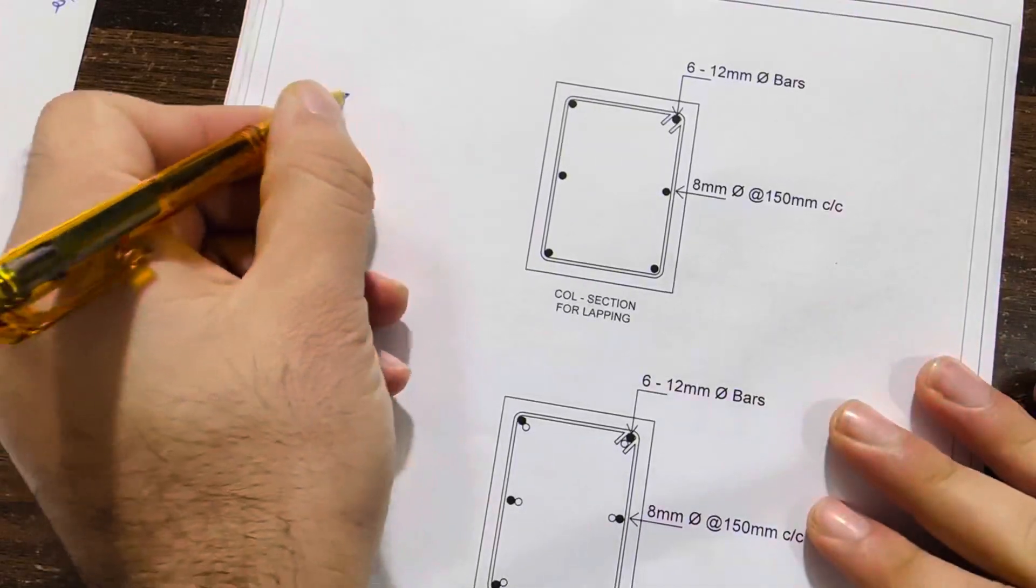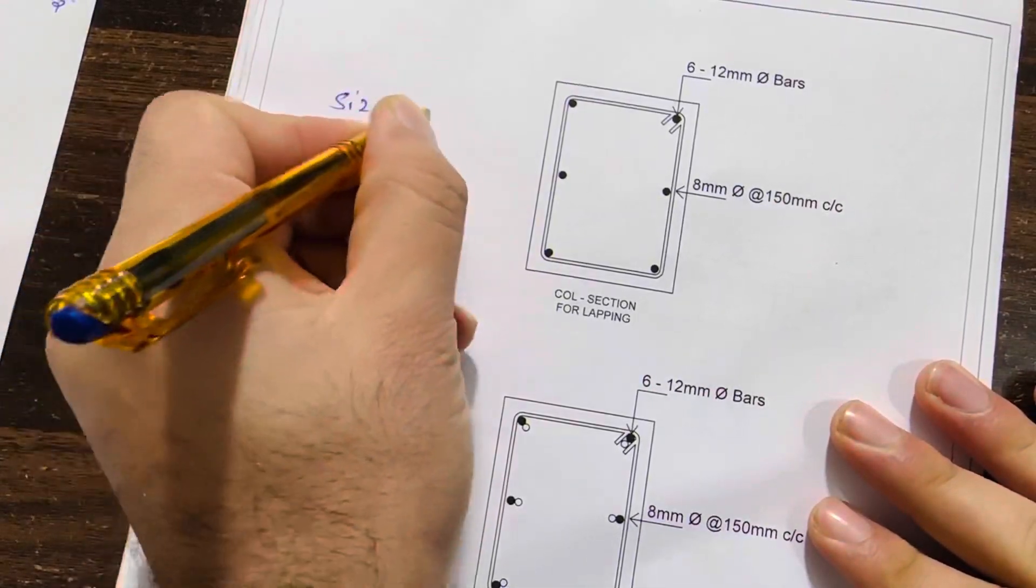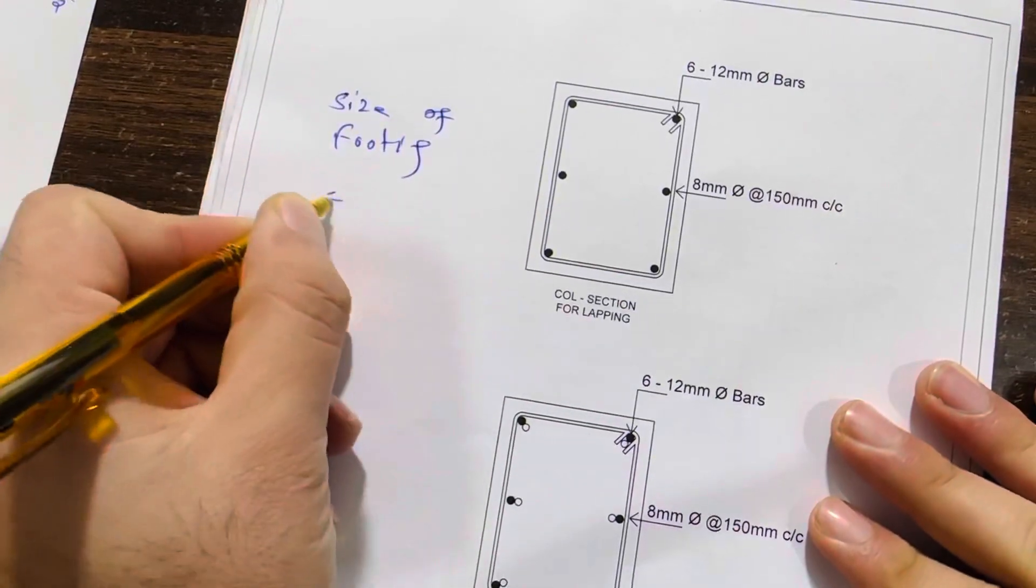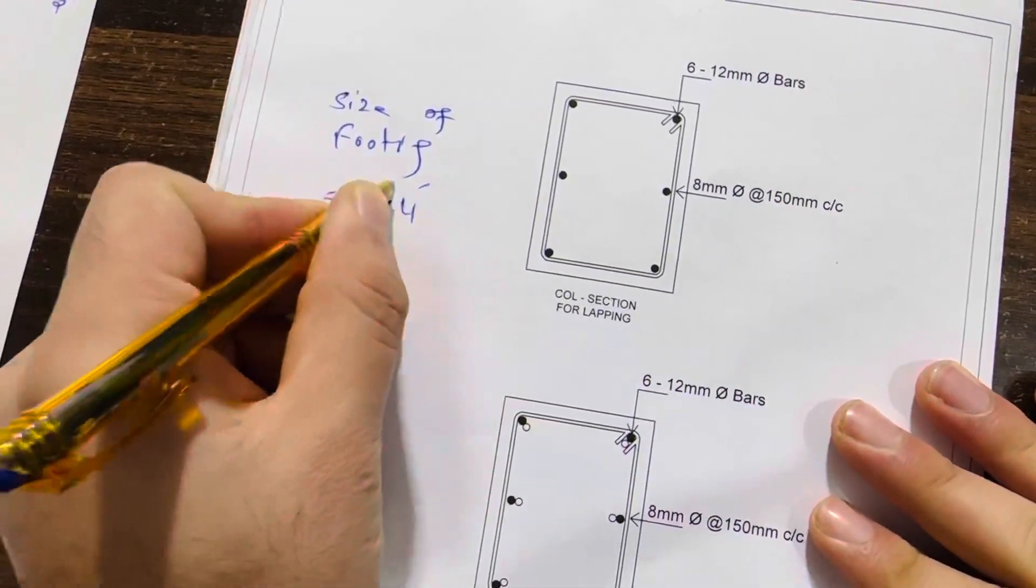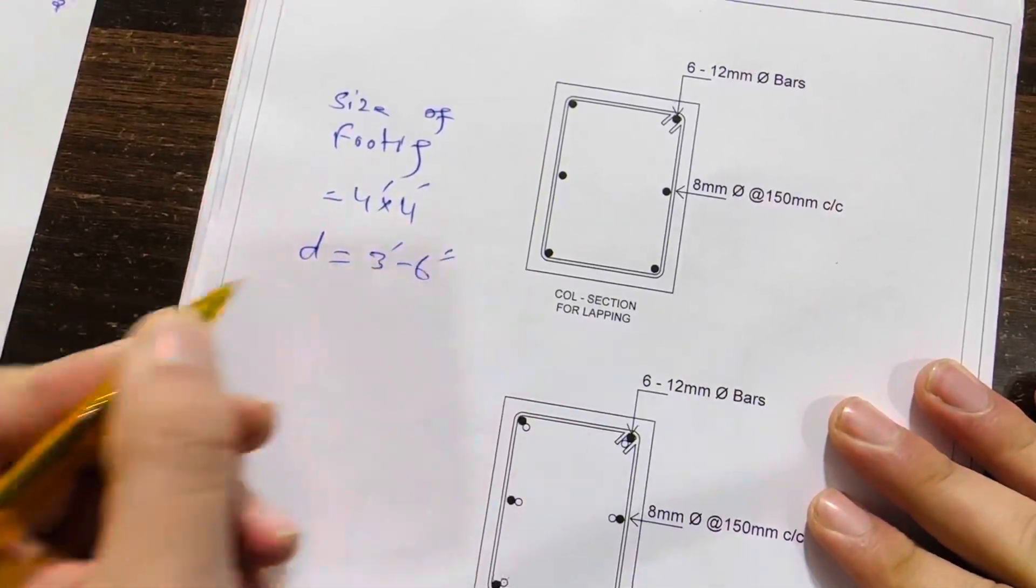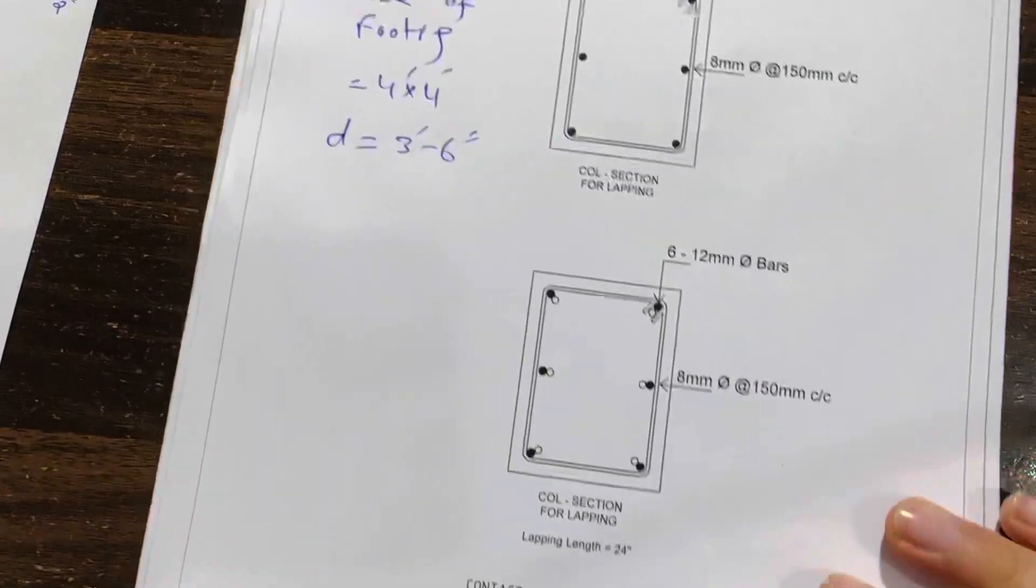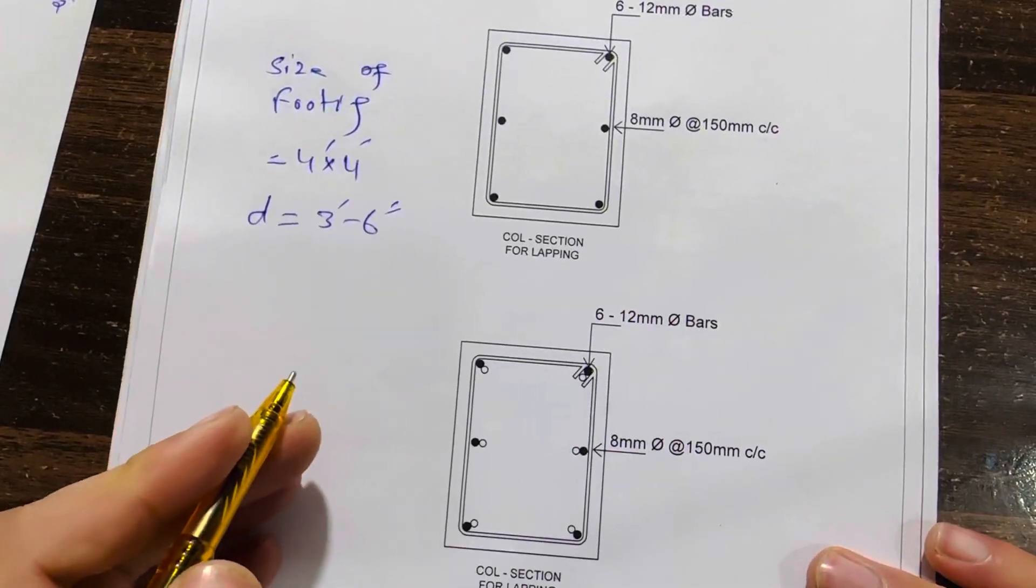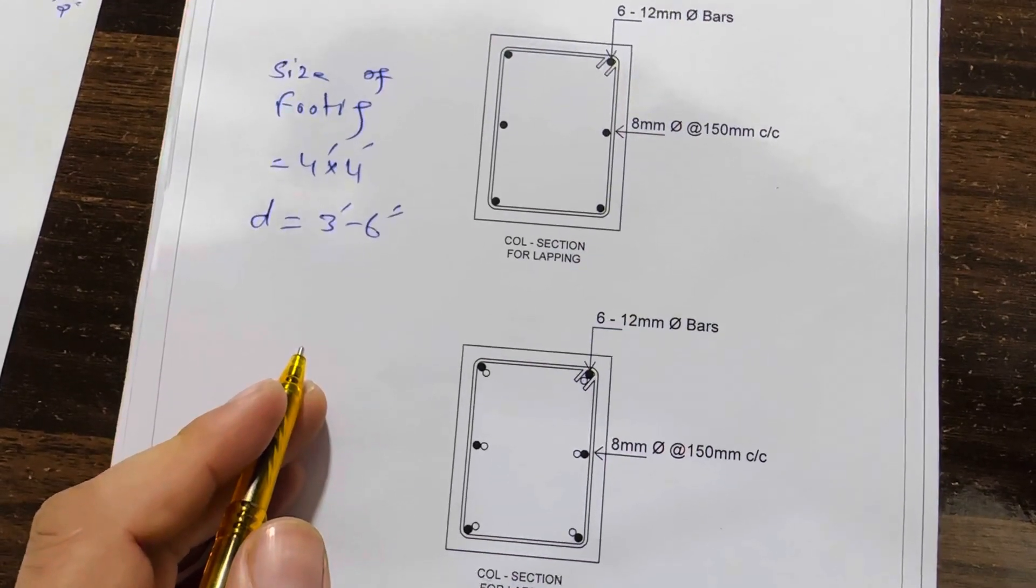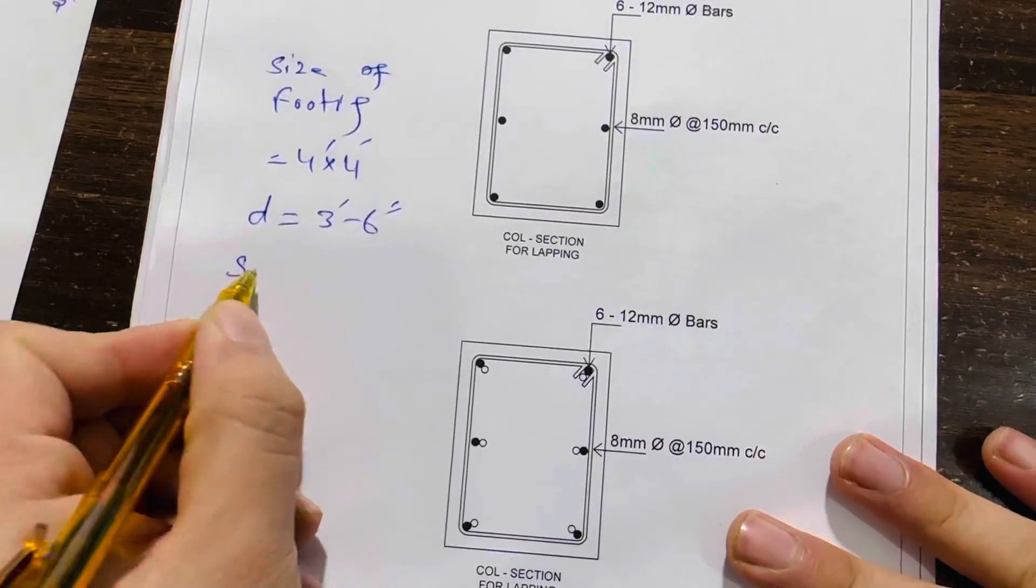Let me guide you for the size of footing and also the strip size. Size of footing: 4 feet by 4 feet, and the depth is 3 feet 6 inches. This is for the footing.